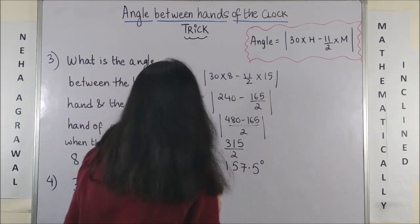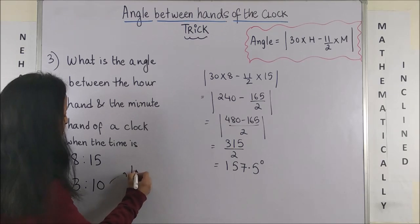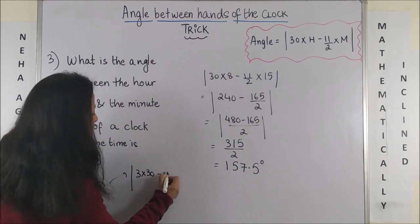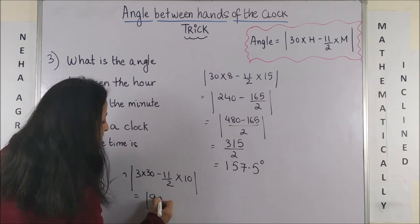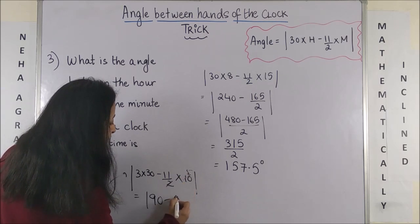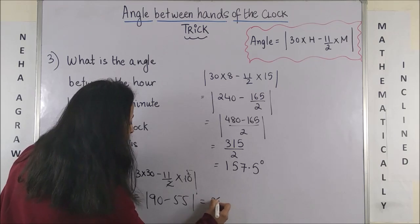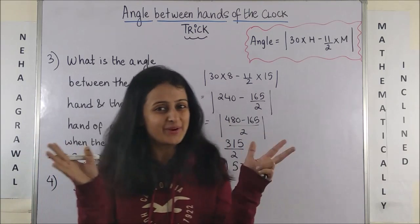Same way when the time is 3:10, you can simply do 3 into 30 minus 11 by 2 into 10. So this makes it 90 minus 55. That makes it 35 degrees. Bingo!